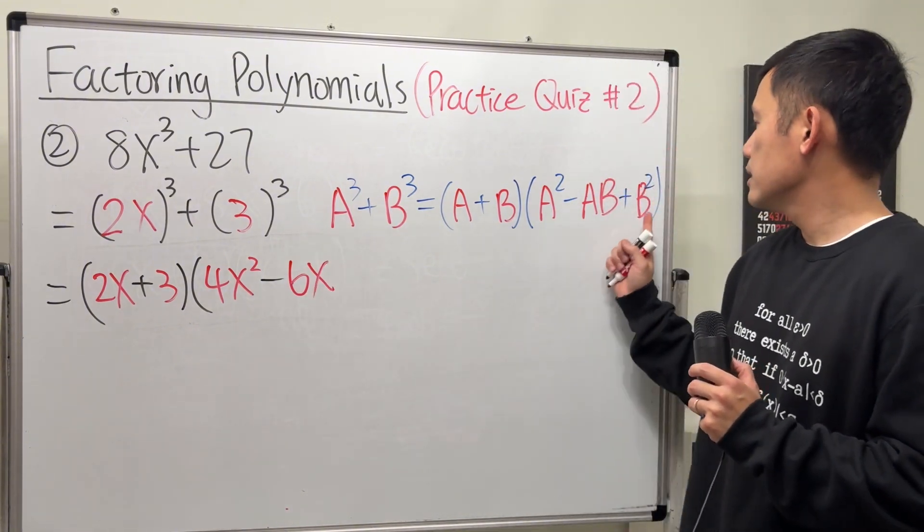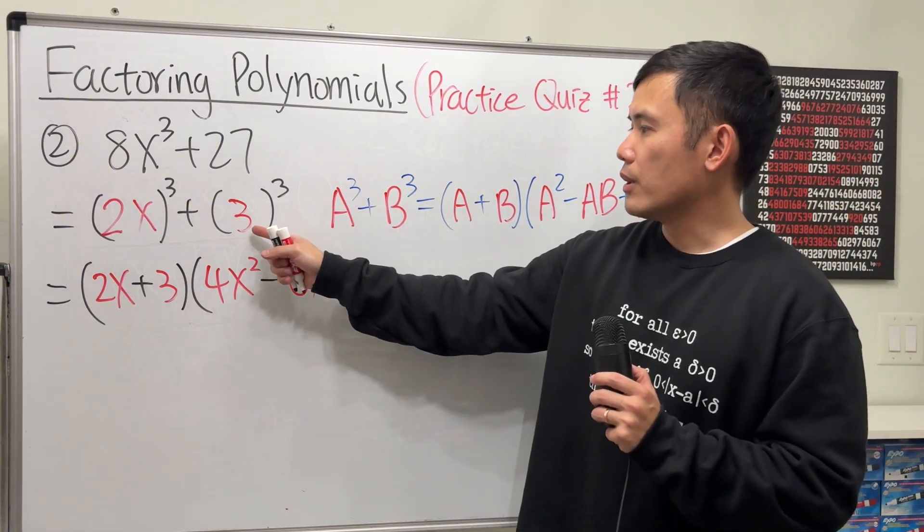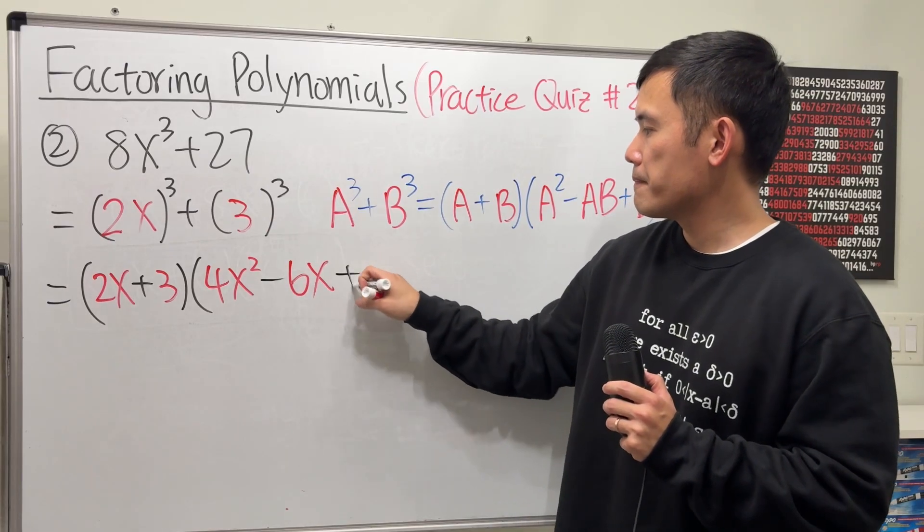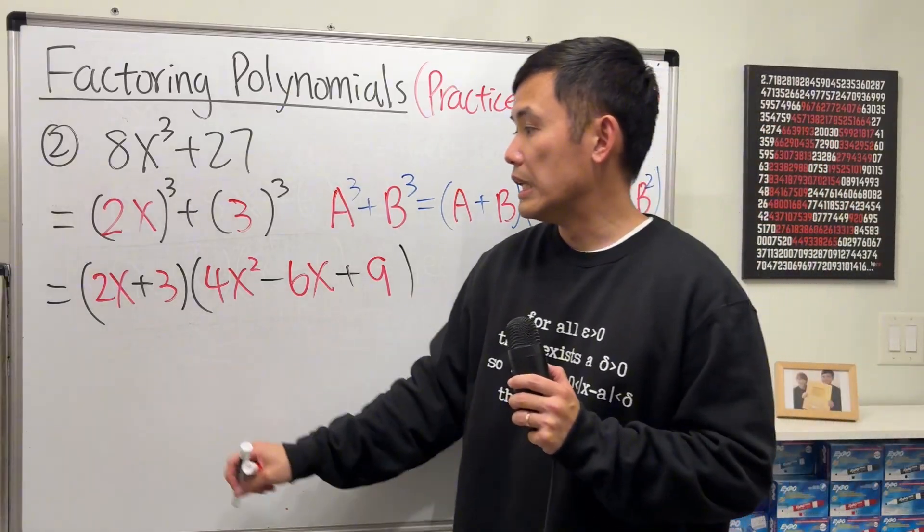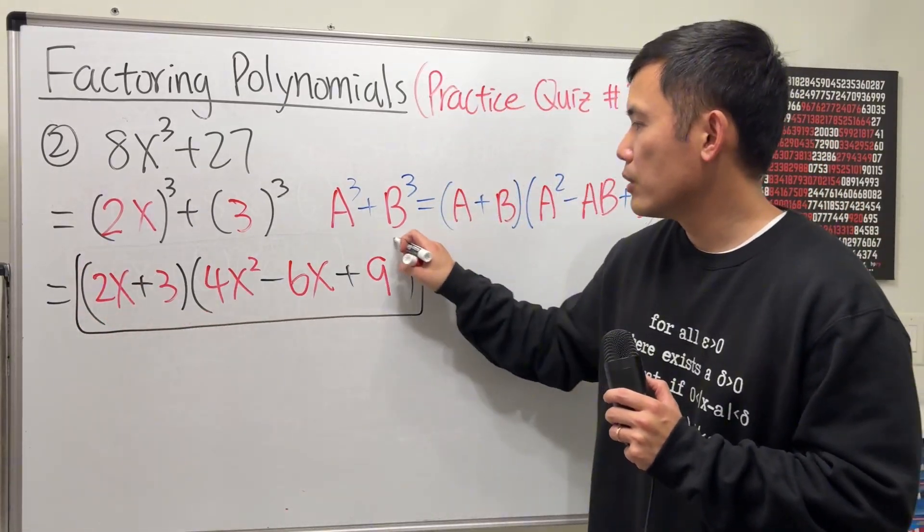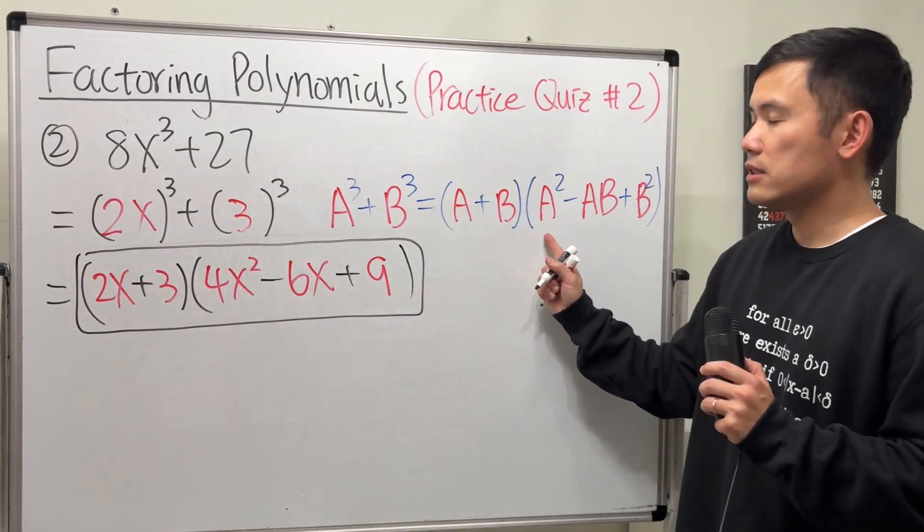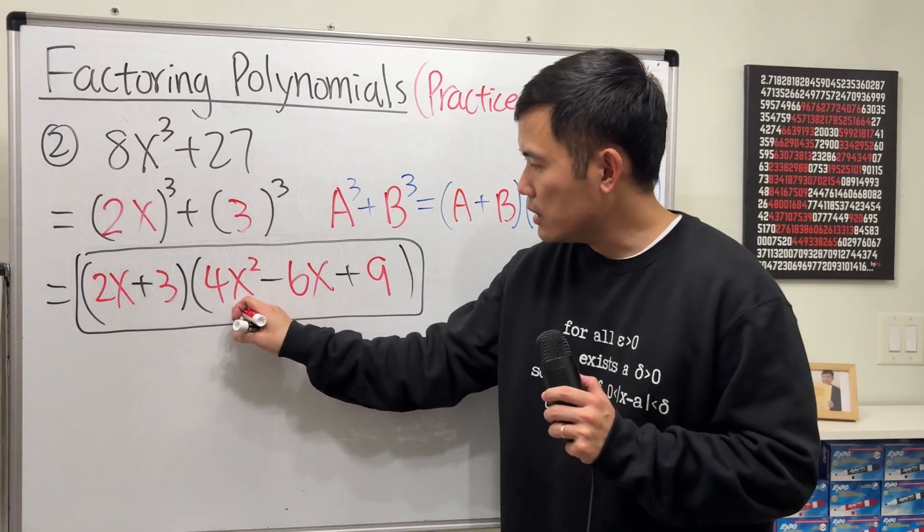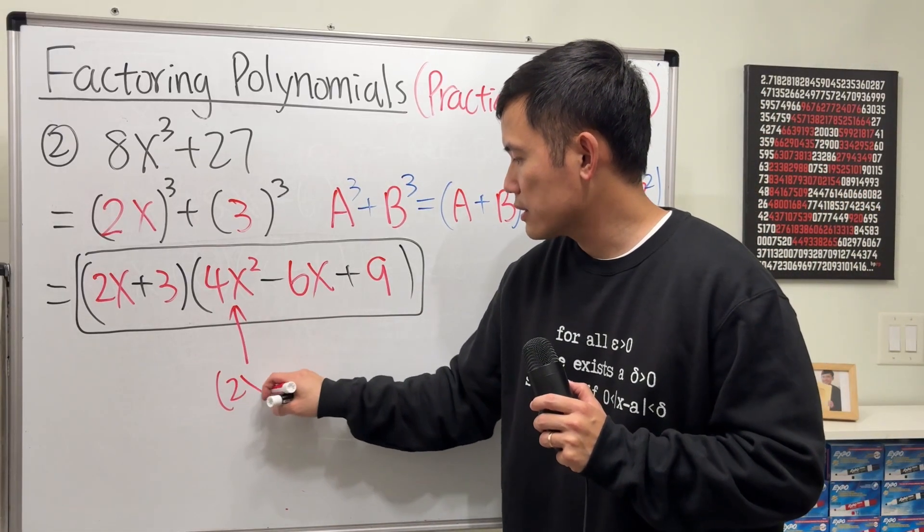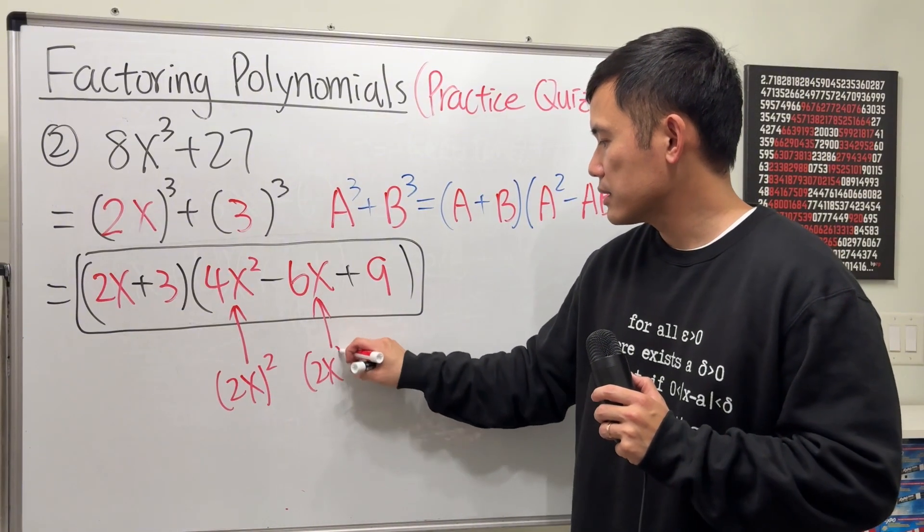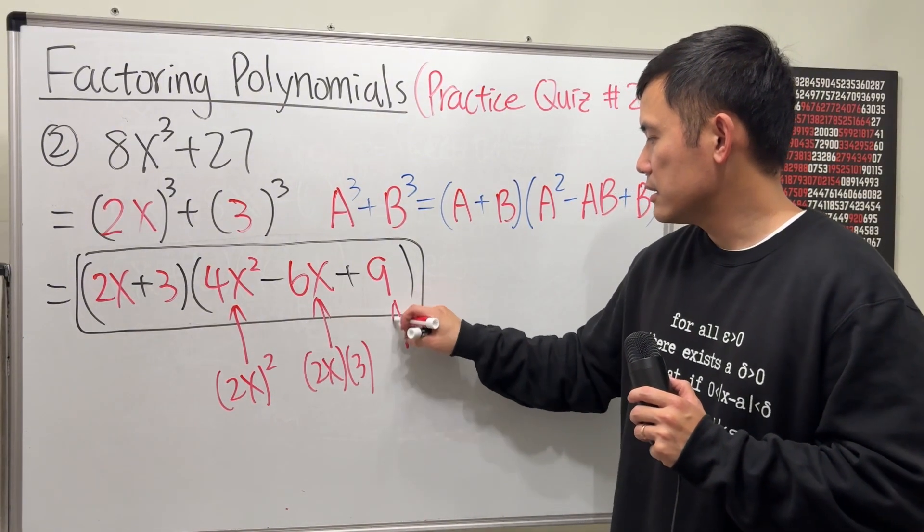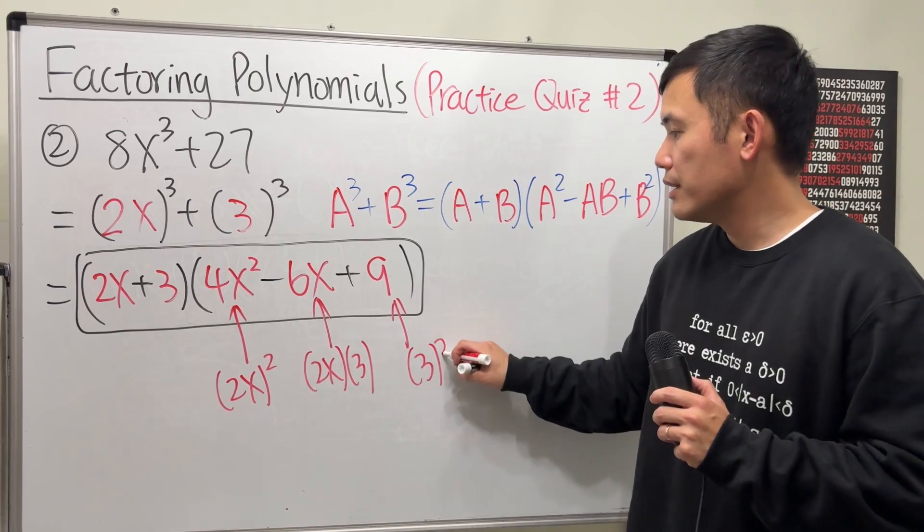And lastly, we have b². So 3², we get 9. And this is it. Do not continue anymore because this right here is not factorable. And that's why the formula stops right here. And once again, this right here is because we have the 2x². And this is because we did the 2x times 3. And lastly, this is because we have the 3².